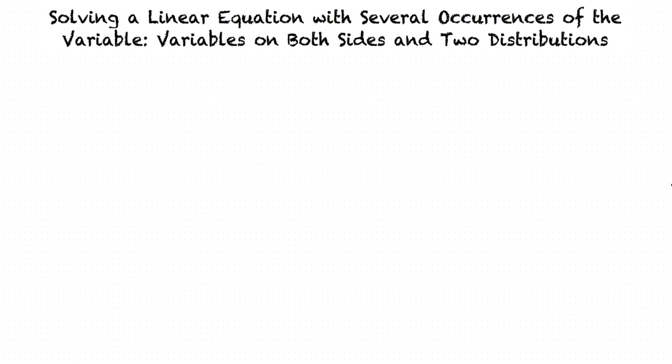This means that we will learn how to solve a problem of the following form. Negative 4 times the quantity of 4w minus 9 plus 4w is equal to 6 times the quantity of w plus 8.